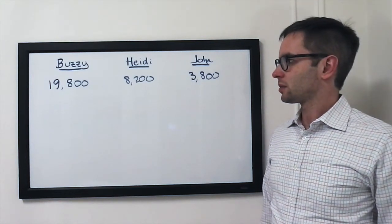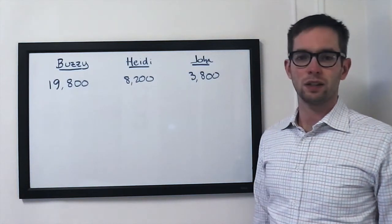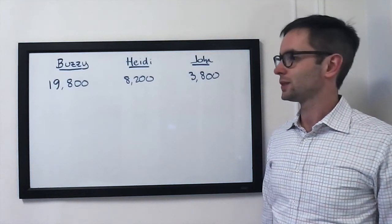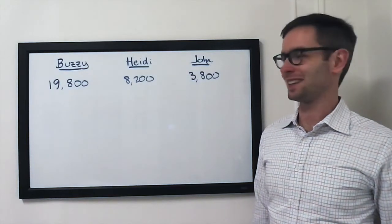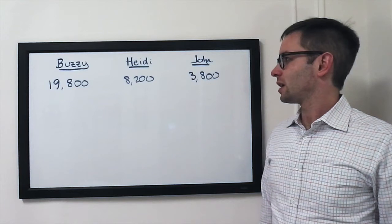And then Buzzy was locked in some interesting battles. Again, there I go with that dumb word interesting. Some really fun battles for me to analyze. He's got this one locked at 19,800 for Buzzy, 8,200 for Heidi, John 3,800.